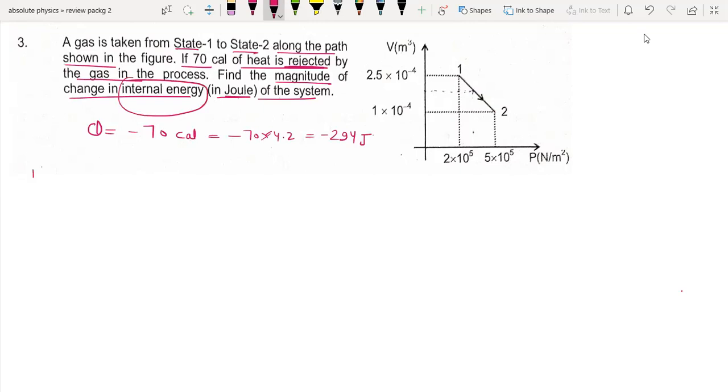From the first law of thermodynamics, delta U equals Q plus W. The work done on this PV graph is the area under the curve. We need to find the area which gives us the work.